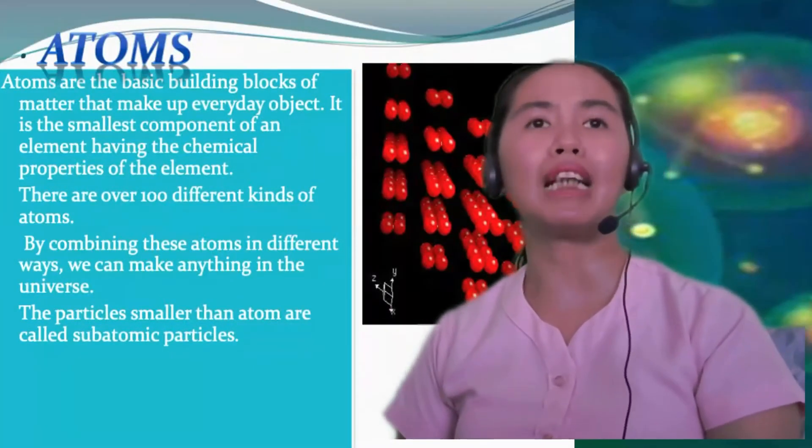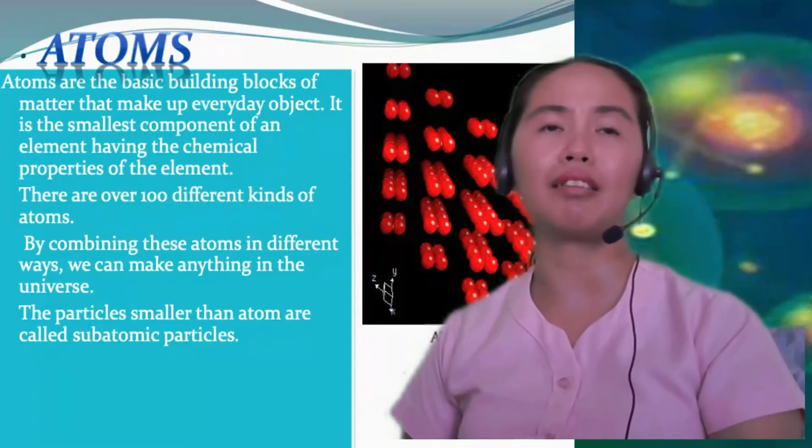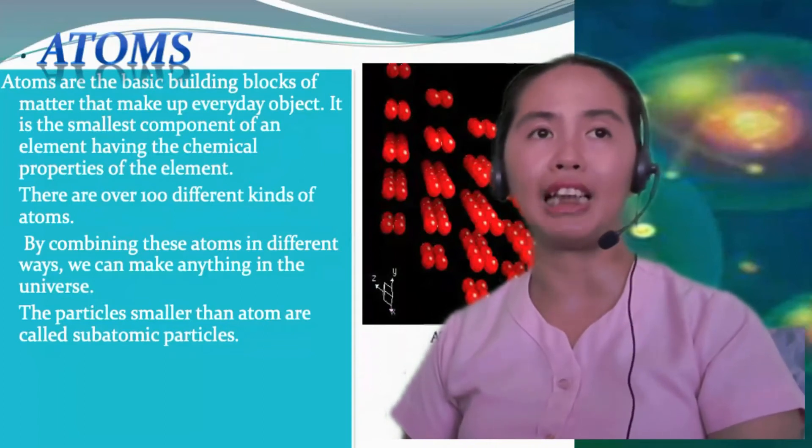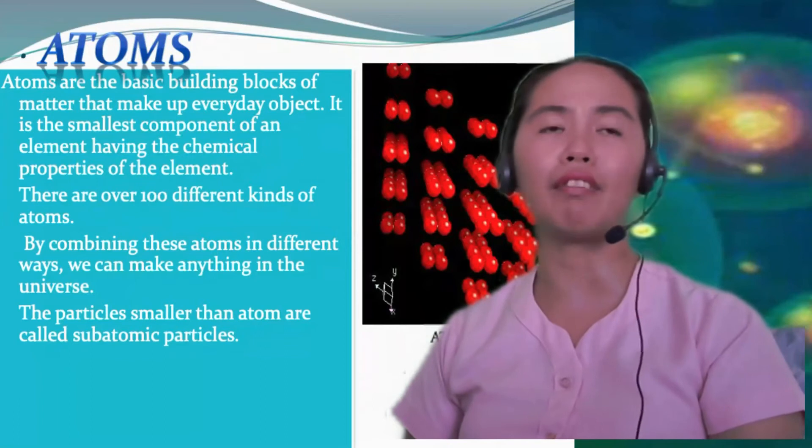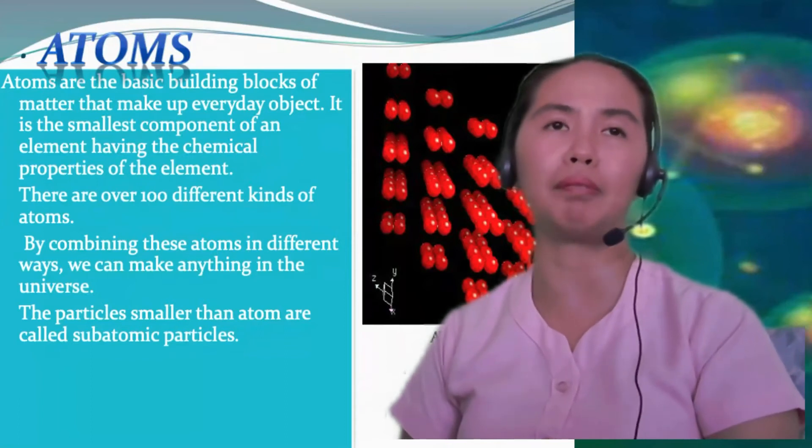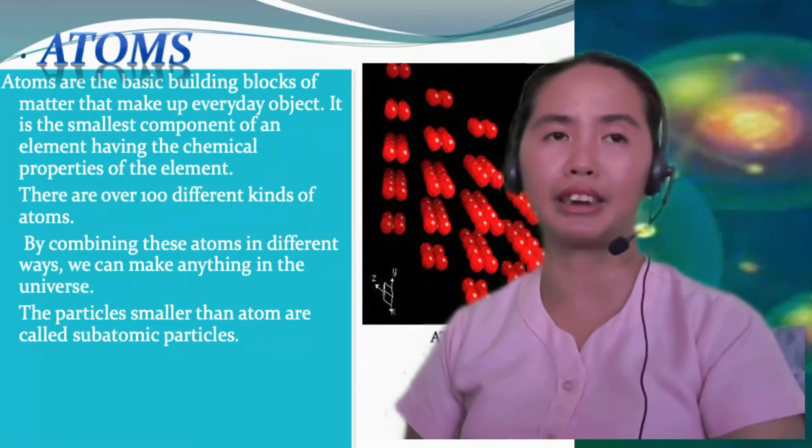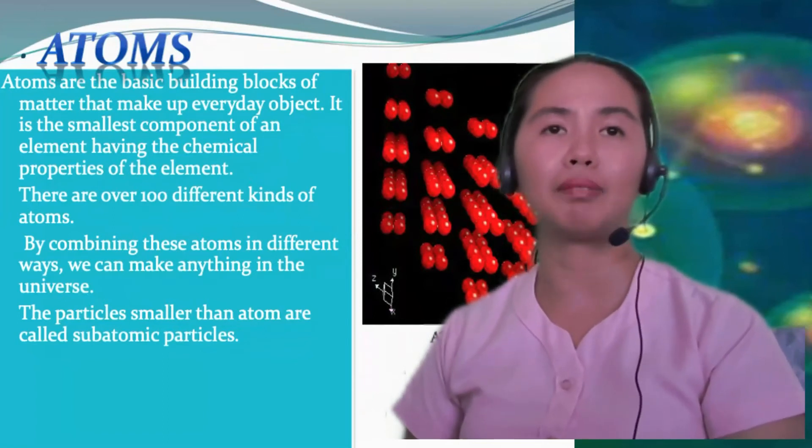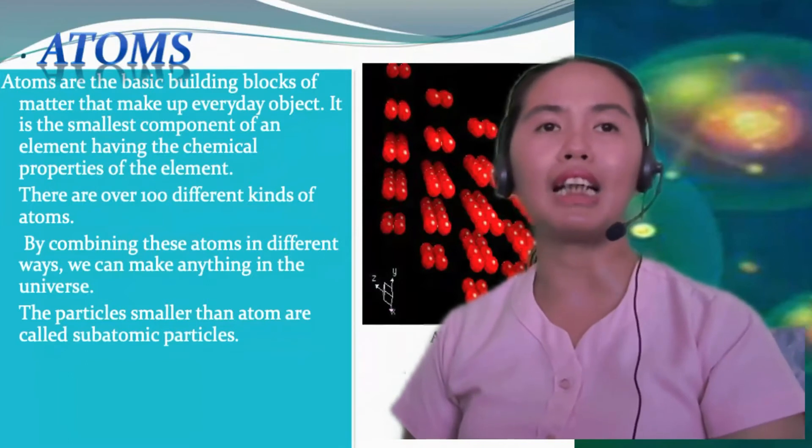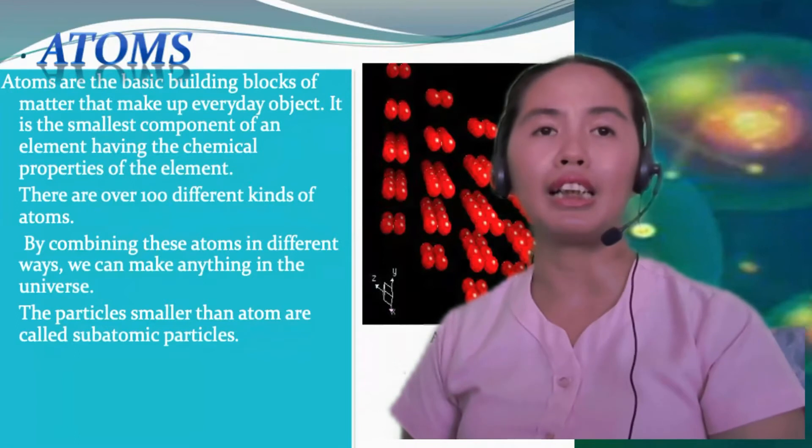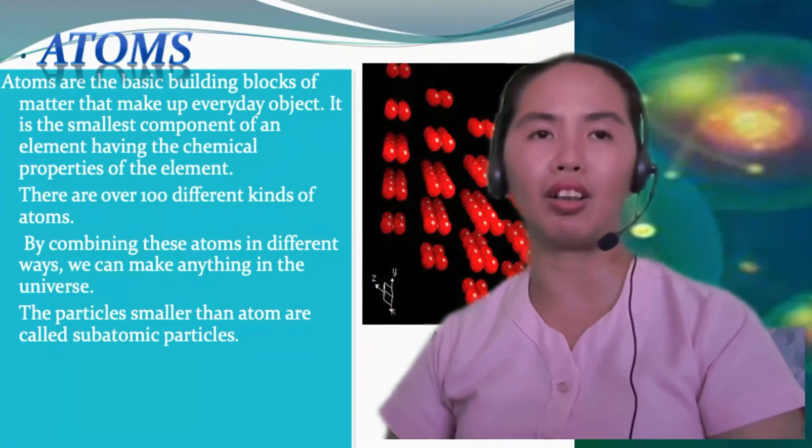Atoms are the basic building blocks of matter that make up everyday objects. It is the smallest component of an element having the chemical properties of the element. There are over 100 different kinds of atoms. By combining these atoms in different ways, we can make anything in the universe. The particles smaller than atoms are called subatomic particles.